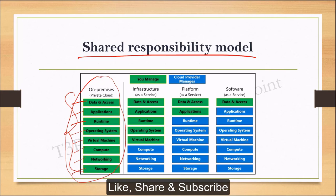When we move to the cloud, we are offered infrastructure in three ways: first is Infrastructure as a Service, second is Platform as a Service, and third is Software as a Service. If we talk about Infrastructure as a Service, what they do is they provide the infrastructure.